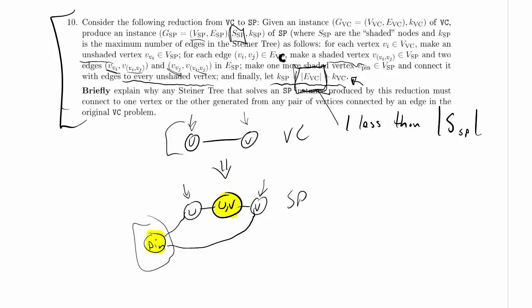So we're only allowed to include in our Steiner tree K_VC more nodes. That's the largest number of nodes we could possibly include.